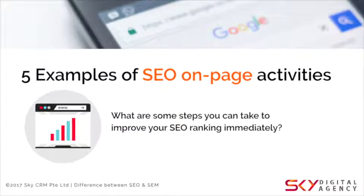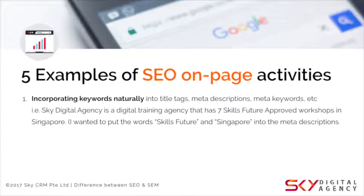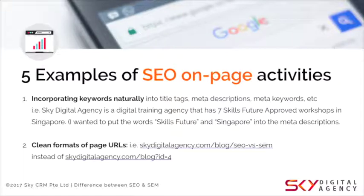Here are five examples of on-page activities you can take immediately. Number one: incorporate keywords into your meta tags, title tags, meta keywords, and meta descriptions. These help people find your website using certain keywords. For example: 'Sky Digital Agency is a digital training agency that has SkillsFuture-approved workshops in Singapore' — this sentence is crafted to drive traffic for the keywords 'SkillsFuture' and 'Singapore' in our meta descriptions.